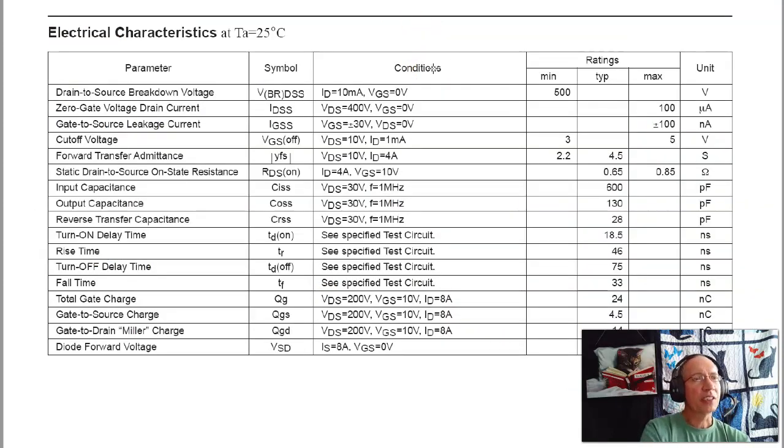Going to the datasheet, again, what I care about is, here's the on resistance, 0.65 ohms. The turn on voltage is actually called cutoff voltage for this one. That's BGS off. It's between 3 and 5 volts. So this MOSFET, I really need 10 volts to turn it on. The voltage capability, it'll handle up to 500 volts. Again, complete overkill. And the capacitance is 600 pF. Again, it's not zero. Very, very small, but not zero. That limits the maximum frequency the MOSFET can operate at.